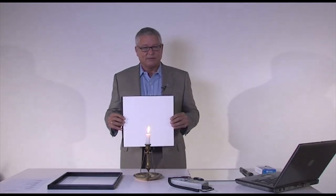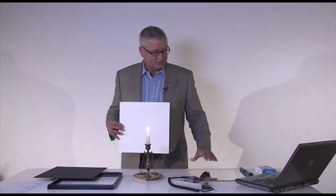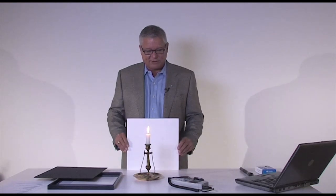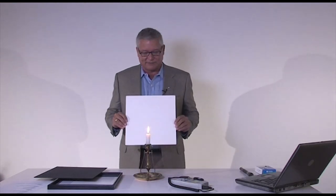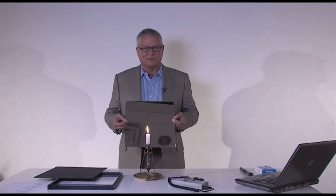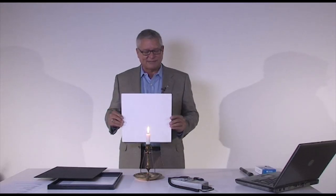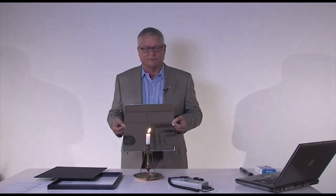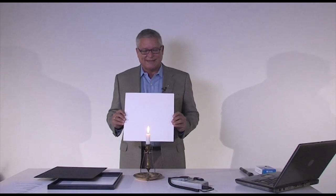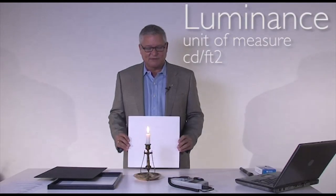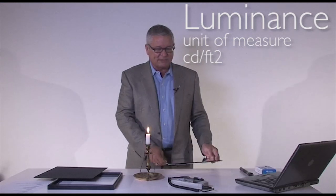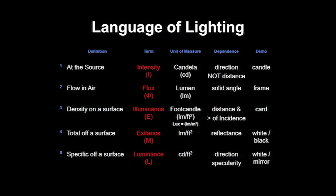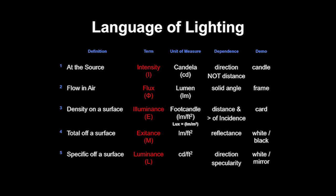But that's not the end of the story. When I change the surface to one which has different reflecting characteristics, I get quite a different effect. So even though perhaps this card is 95% reflective and perhaps this surface — a mirror — is also 95% reflective, the total amount of light, or the exitance, coming off of these surfaces is the same, but the way in which light comes off of these surfaces is very, very different. This is a function of the specularity of the surface, and this is what we call luminance — the specific way in which light comes off of a surface. It's luminance which allows us to see things; it's luminance which enables our ability to see the world, and it's luminance that we really try to control as we design light in architectural space.